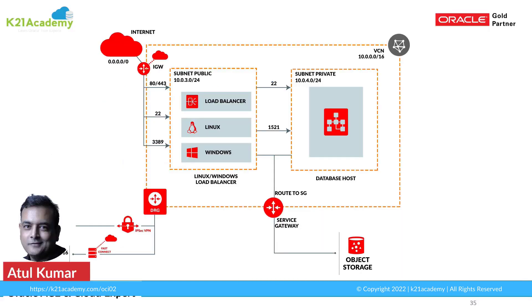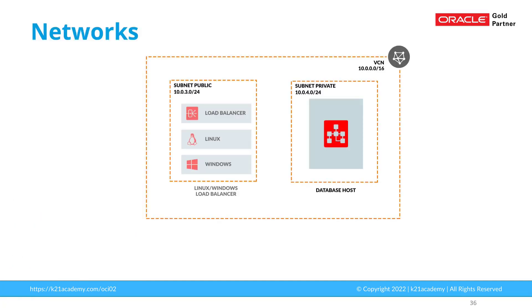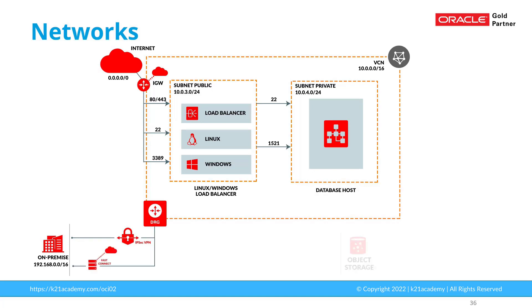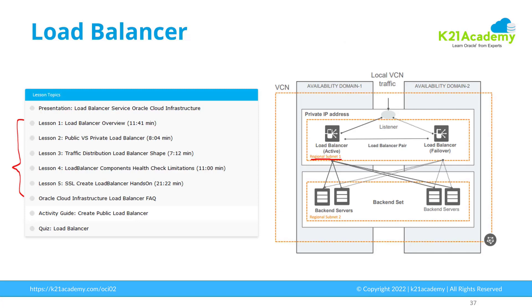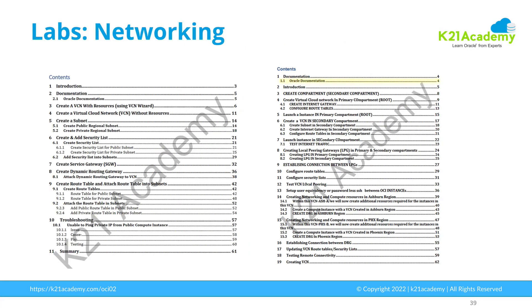To recap, networking topics include virtual cloud network, public and private subnets, security list as firewall, internet gateway to connect to the internet, dynamic routing gateway to connect to on-premise via IPSec VPN tunnel or FastConnect, and service gateway to connect to object storage. You should also learn about public and private load balancers, advanced topics like transit routing with hub and spoke model, local peering within a region, and remote peering across regions, plus all the corresponding hands-on labs.